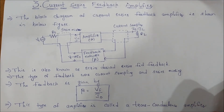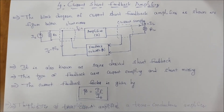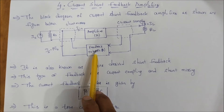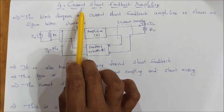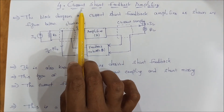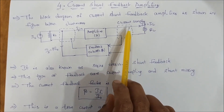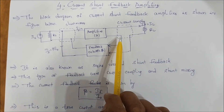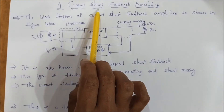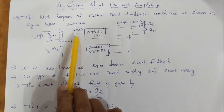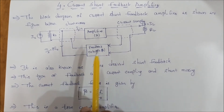Next, the current shunt feedback amplifier. This is the block diagram of the current shunt feedback amplifier. Current sampling is on the output side — the output side is the sampling network, which is the current sampler. Shunt is the mixing network on the input side. This is the shunt mixer and this is the current sampler.